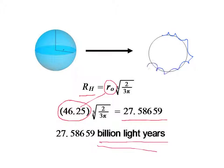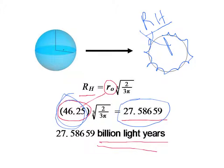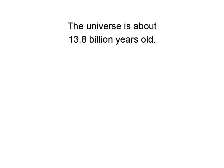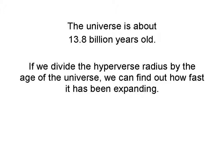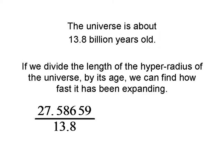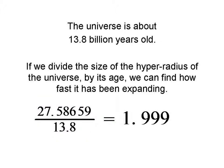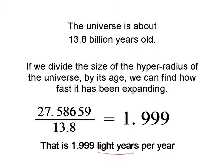That's the radius of the hyperverse, r sub h. And as you recall from the examples of one dimension going to two and two to three, this makes sense because the radius of the next higher dimension should be less than the dimension that produced it. The universe is about 13.8 billion years old. If we divide the hyperverse radius r sub h by the age of the universe, we can find out how fast the hyperverse has been expanding. Taking 27.58659 billion light years divided by 13.8 billion years, we get 1.999 light years per year.